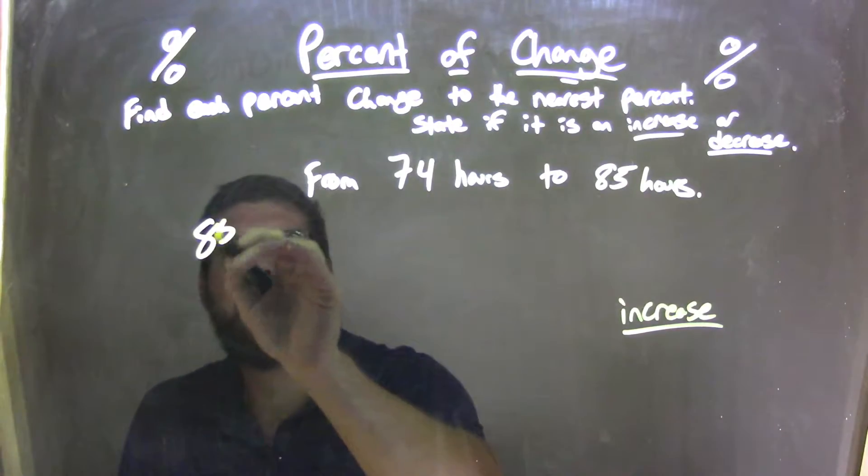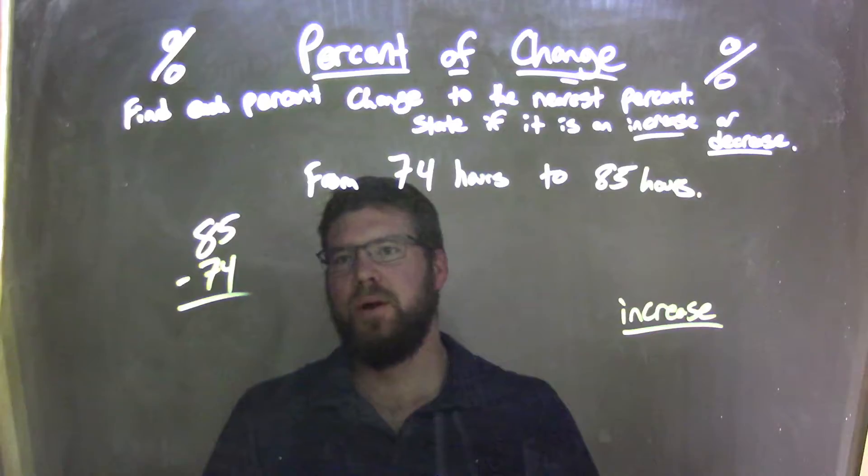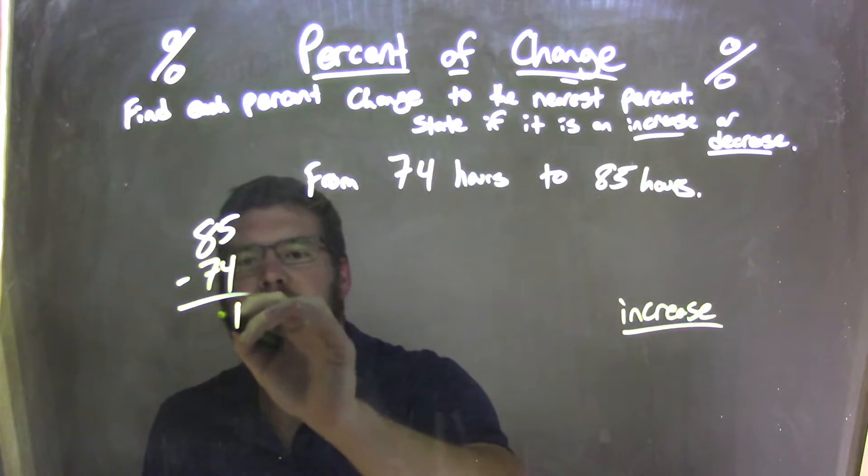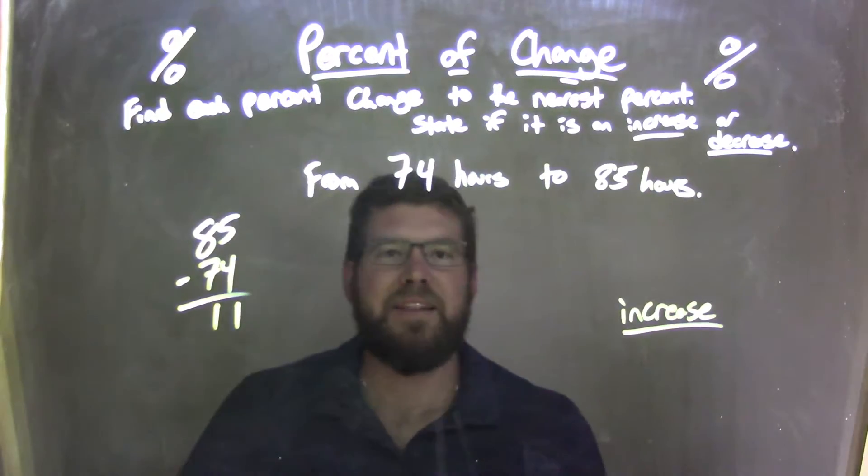So, we take 85, subtract the 74 from it. 5 minus 4 is 1, 8 minus 7 is 1. So, now we have 11.